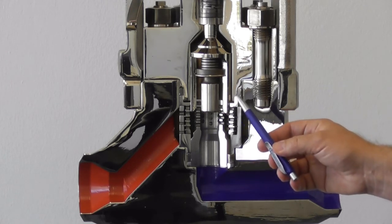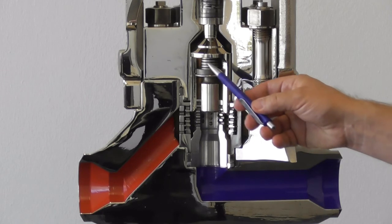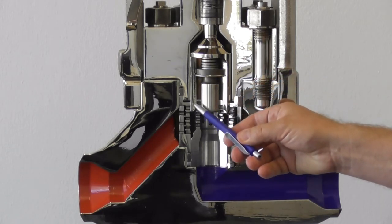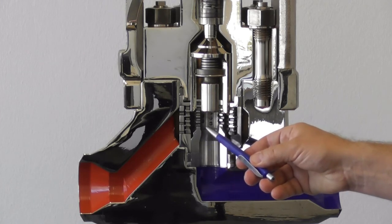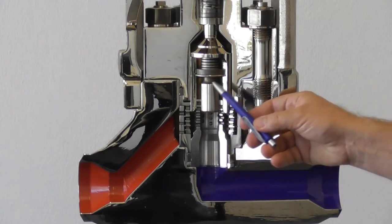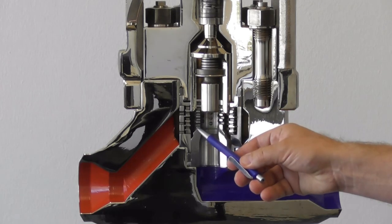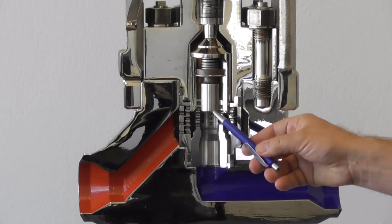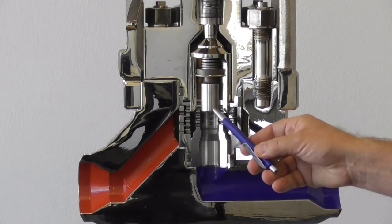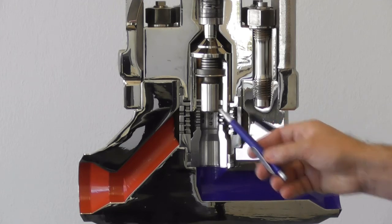Now how it works. We are going down with the main valve plug into the direction of the main seat. But before the main valve plug touches the seat, we are interrupting the flow with the secondary valve plug, with the cone, which I want to show now.